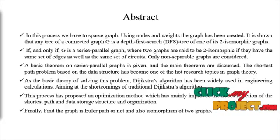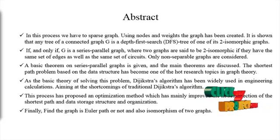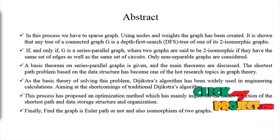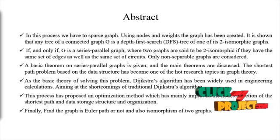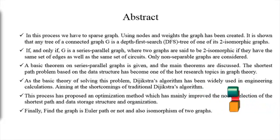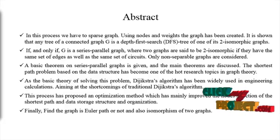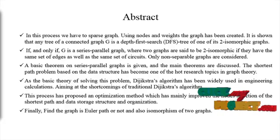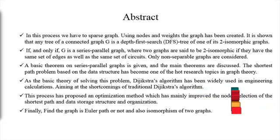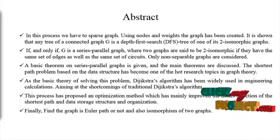In this proposed work, we spare a graph using nodes and weights. It is shown that any tree of a two-connected graph G is the depth-first search (DFS) tree of a 2-isomorphic graph. If and only if G is a serial-parallel graph, where two graphs are said to be 2-isomorphic if they have the same set of edges as well as the same set of circuits. Only separable graphs are considered.